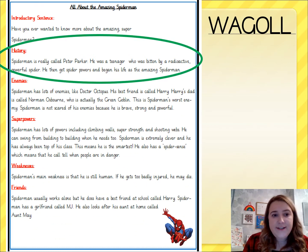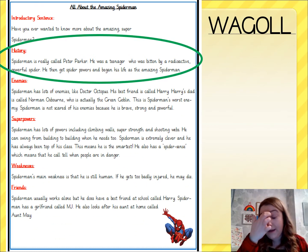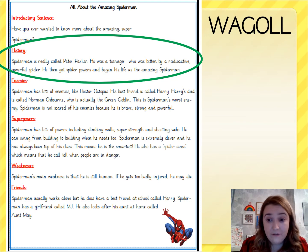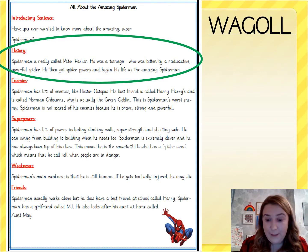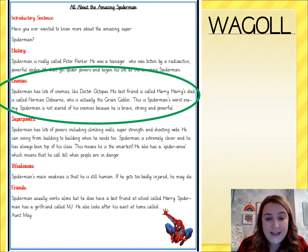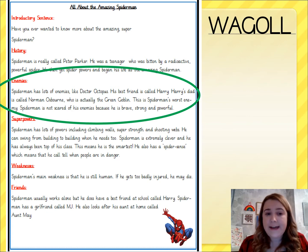So this fact file is called 'All About the Amazing Spider-Man.' The second subheading says: History. Spider-Man is really called Peter Parker. He was a teenager who was bitten by a radioactive, powerful spider. He then got spider powers and began his life as the amazing Spider-Man. That's the second subheading telling us about the history of Spider-Man. The next subheading says: Enemies. Spider-Man has lots of enemies like Dr. Octopus. His best friend is called Harry and Harry's dad is called Norman Osborn, who is actually the Green Goblin. This is Spider-Man's worst enemy.